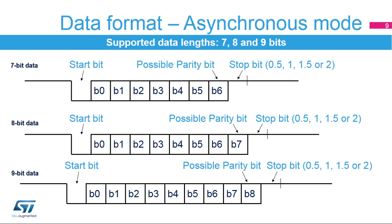The frame format used in asynchronous mode consists of a set of data bits, in addition to bits for synchronization, and optionally a parity bit for error checking. The USART supports seven, eight, or nine bits data lengths. A frame starts with one start bit, where the line is driven low for a one bit period. This signals the start of a frame and is used for synchronization. The start bit is followed by seven, eight, or nine data bits. If parity control is enabled, the parity bit is transmitted as the last data bit and is included in the data length count.